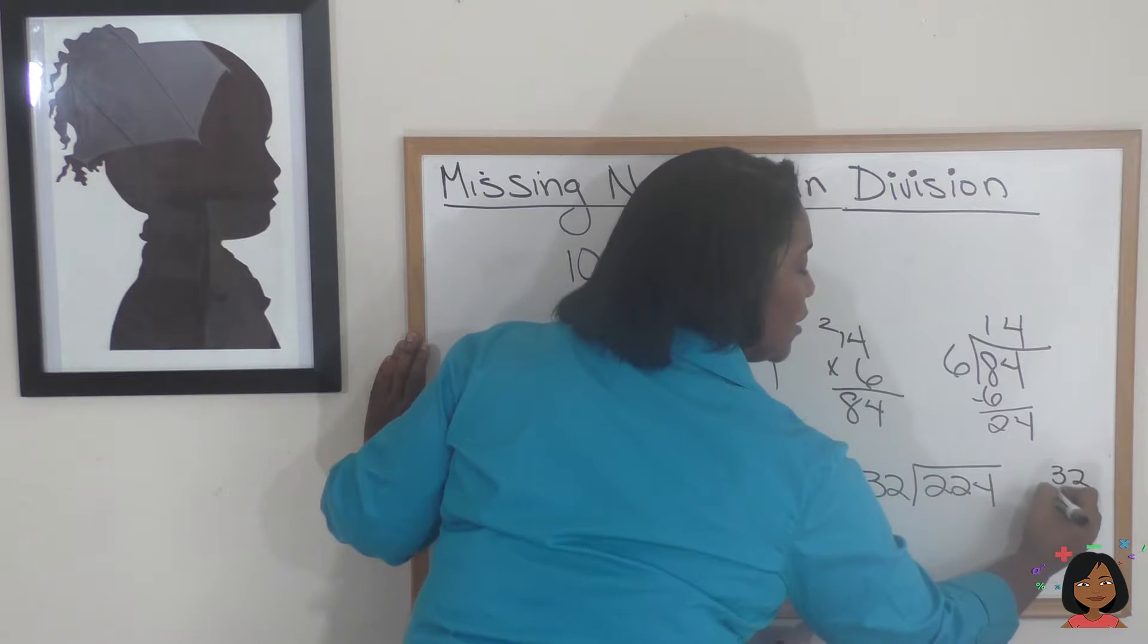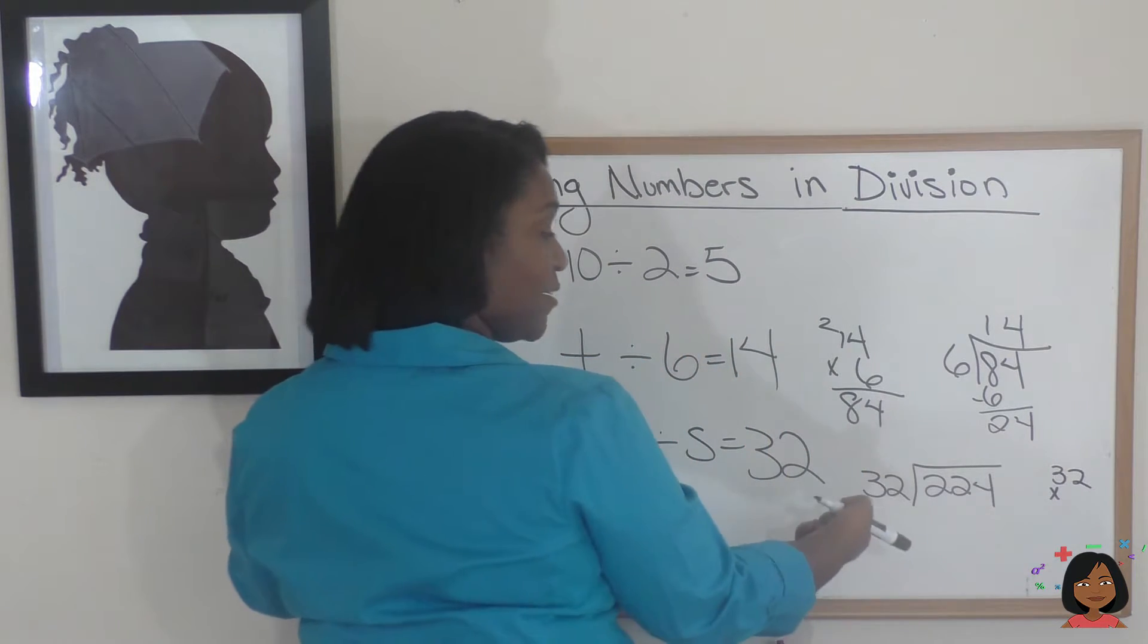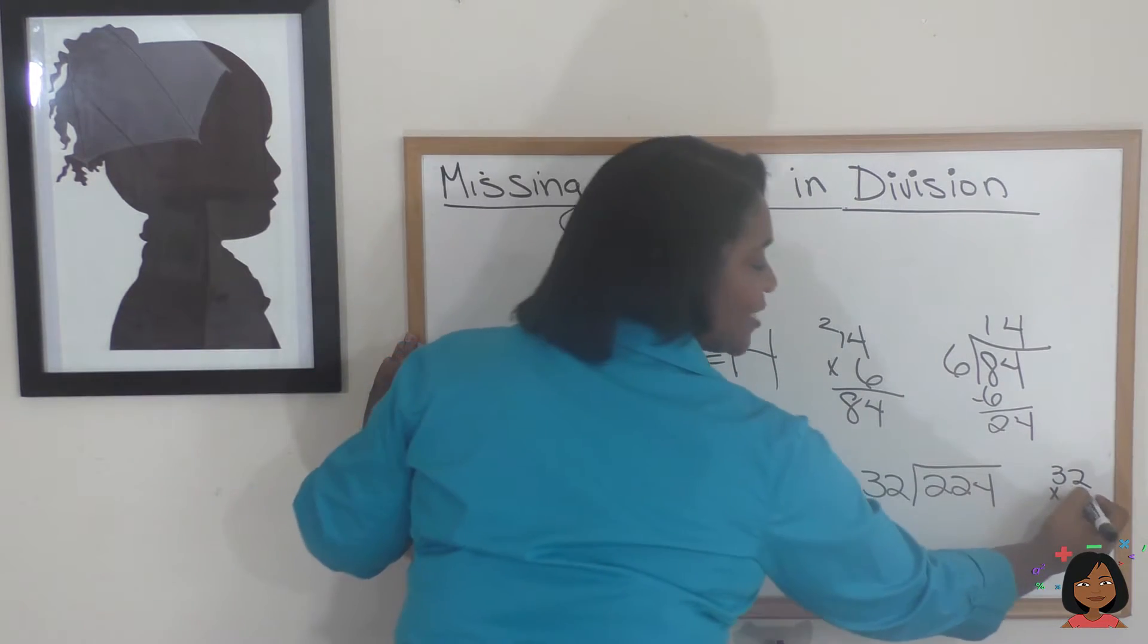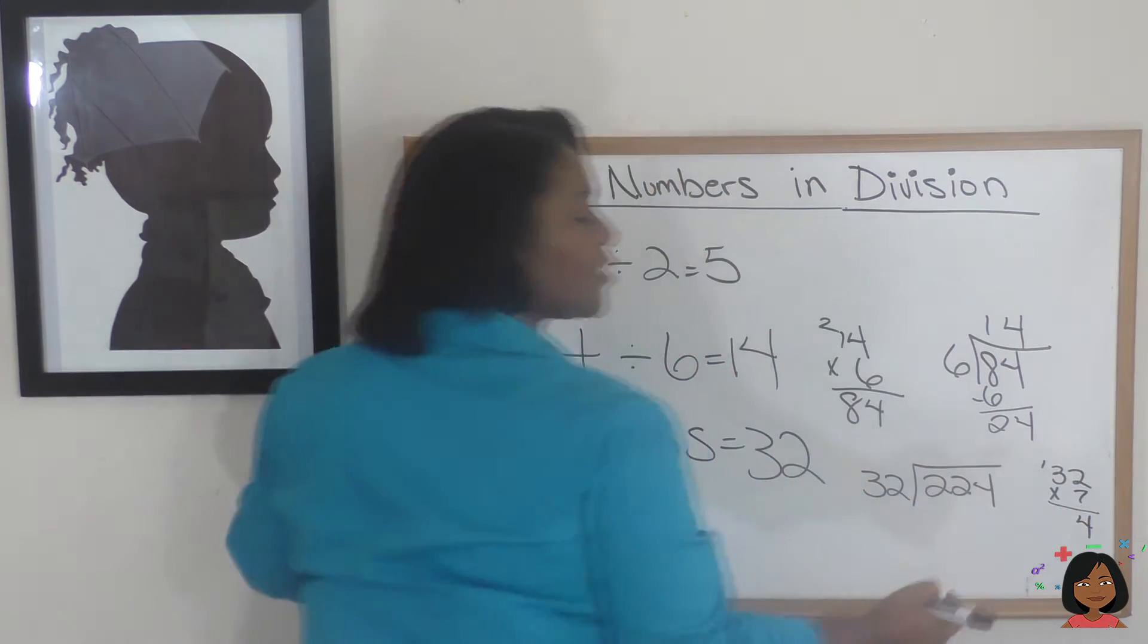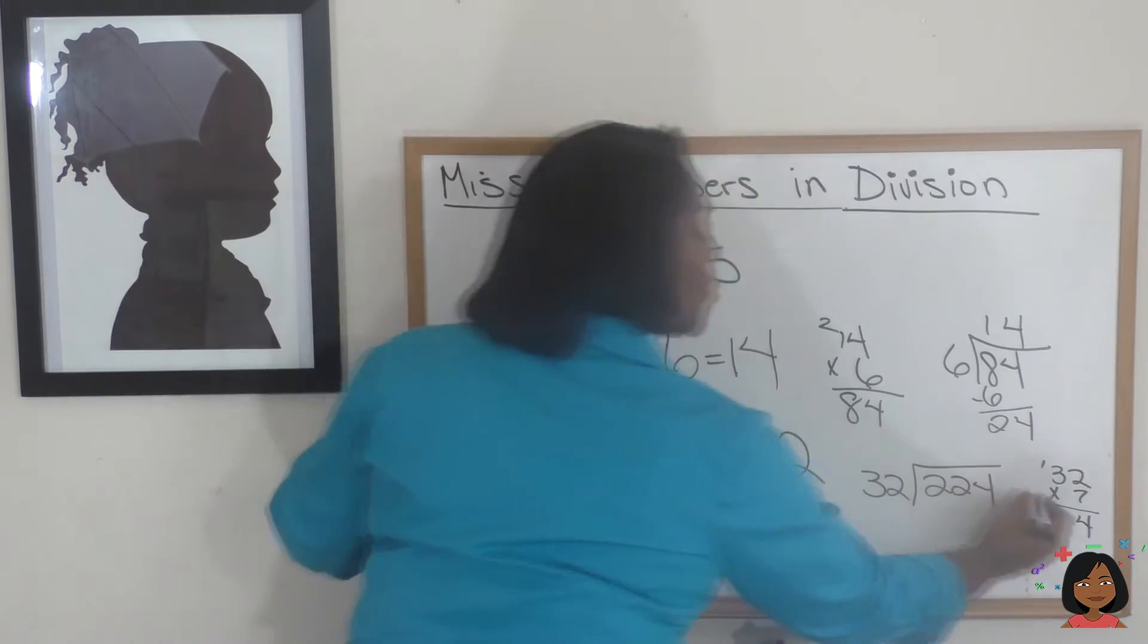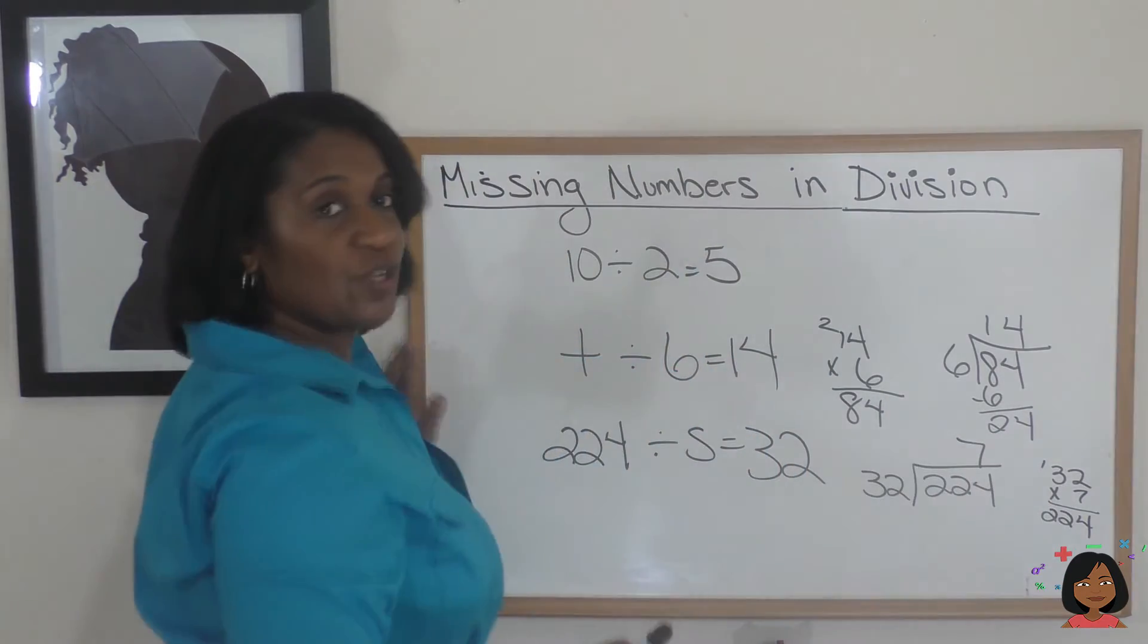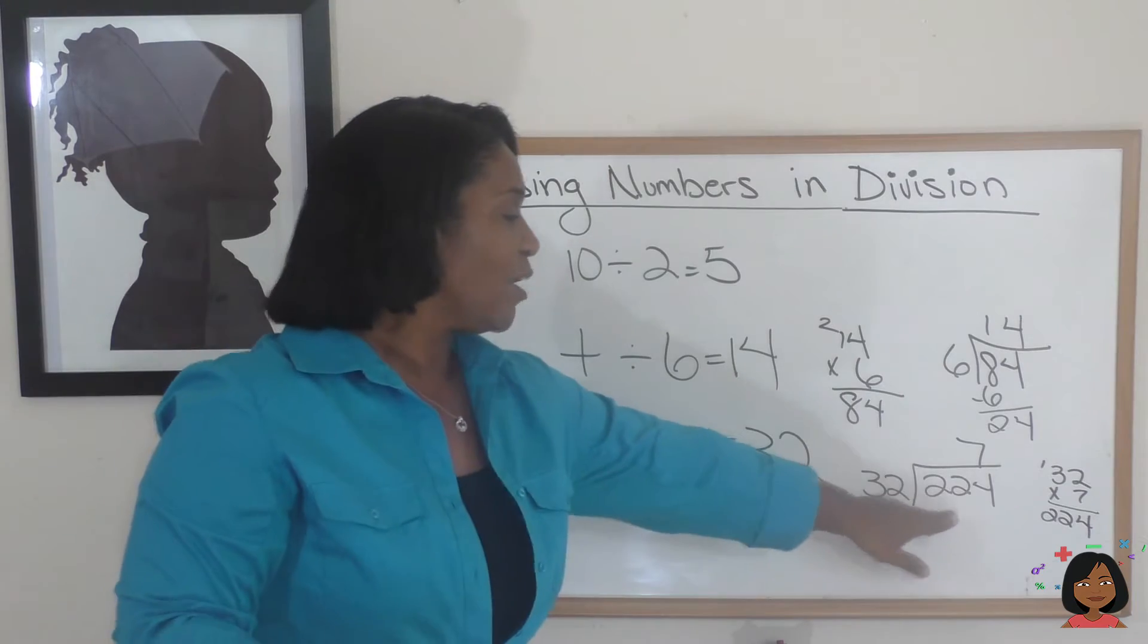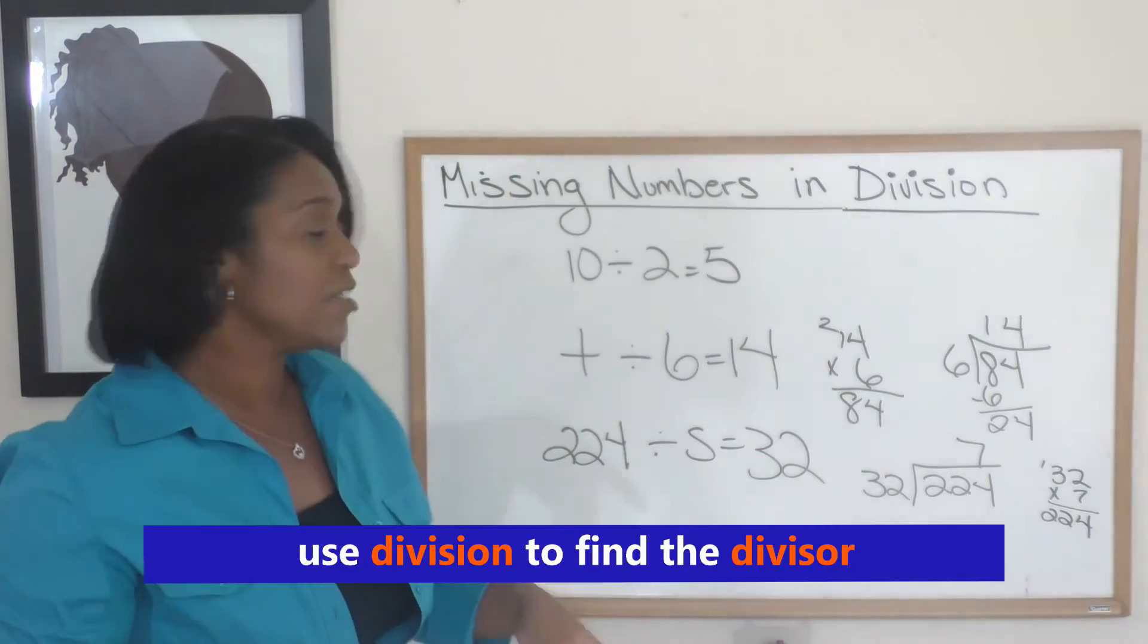7 times 2 is 14, 7 times 3 is 21, plus 1 is 22... look at that! So 7 times 32 gives me 224. So this time we used division to find the divisor.